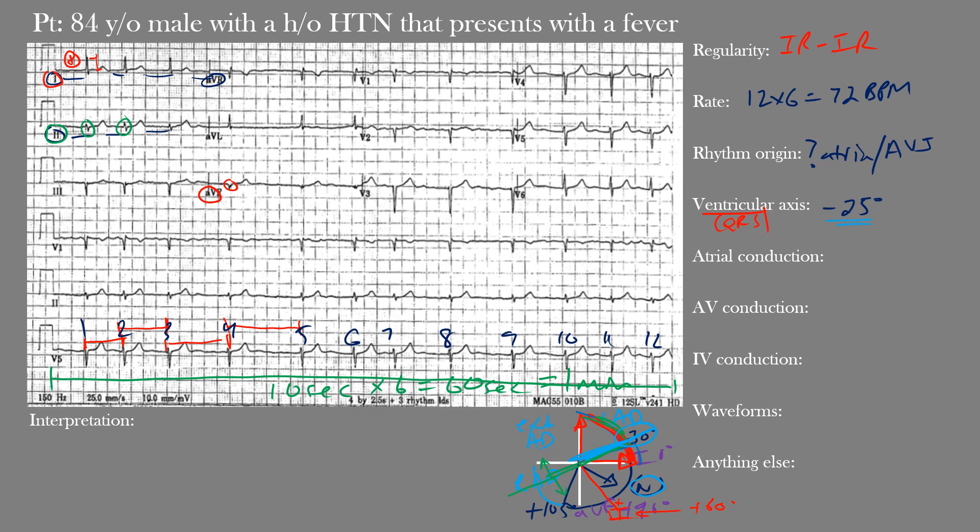For atrial conduction, we can't make out any P waves, which represent atrial depolarization, so there is no clear atrial conduction. For AV conduction, again no clear P waves means no clear PR interval or PR segment, so no good evidence of AV conduction. For intraventricular (IV) conduction, the QRS duration should be between 70 and 110 milliseconds — about two to three small boxes. Here we have narrow QRS complexes within normal limits; the QRS duration was 88 milliseconds, so IV conduction is normal.